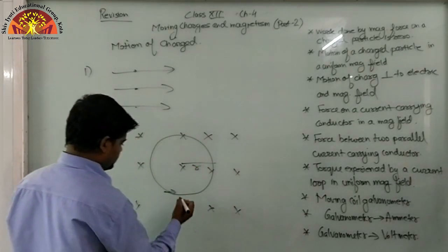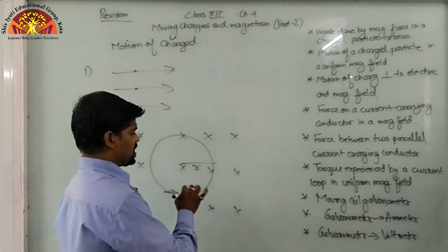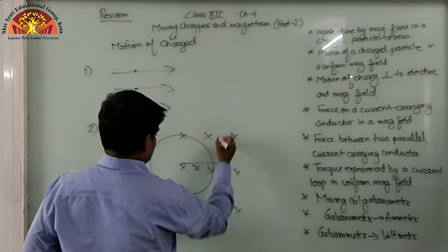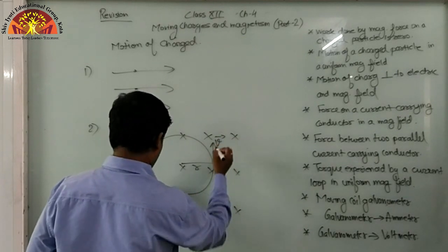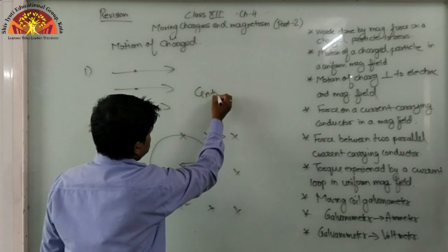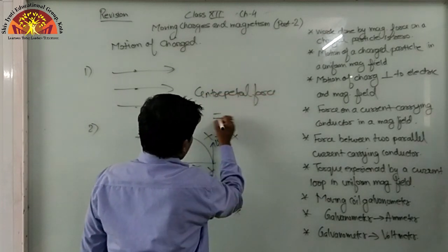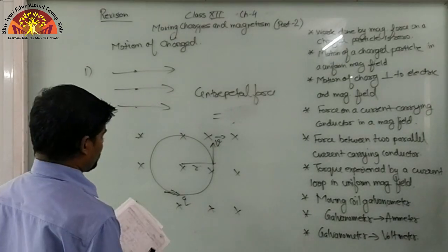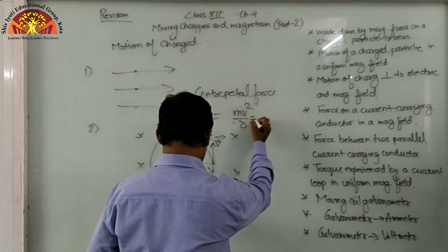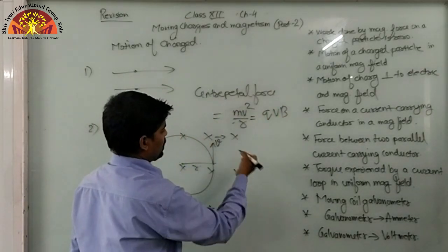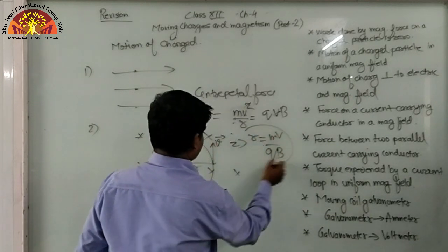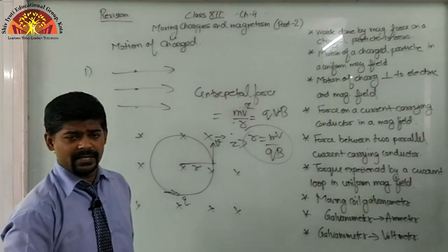Suppose the radius of this circular path is r and charge is q. In a uniform magnetic field, if any charged particle moves perpendicular to the field, it undergoes circular motion. The centripetal force is mv²/r, and the magnetic force qvB also acts on it. Both forces are equal. Solving: v²/v cancels, giving r = mv/qB. This is the radius of the circular path.